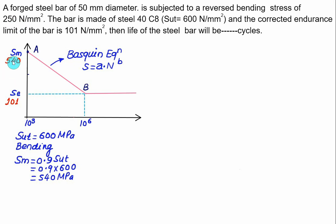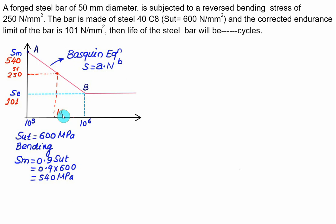Somewhere between SM = 540 and SE = 101, you have to place the fatigue strength SF = 250. We want to find out the life N corresponding to SF on the Basquin equation. First, you have to find out constants A and B. Remember: A = SM² / SE, and B = −(1/3) × log₁₀(SM / SE).